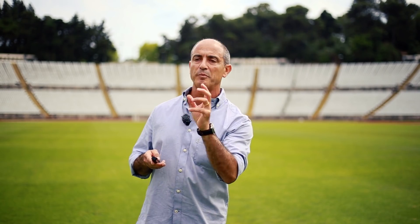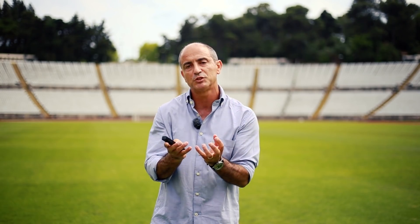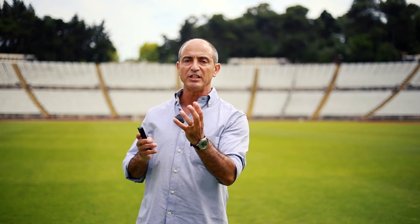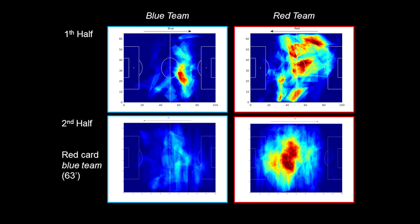The blue team played almost for half an hour with only 10 players. They needed to readapt their spatial configuration, which consequently changed the passing opportunities, as we can see in the heat map of the blue team. However, the most interesting result was how the red team adapted to these changes in the blue team's spatial configuration — instead of creating passing opportunities all over the field, they concentrated efforts to create threatening situations on the central lane of the field. So the algorithm can identify the changes in these tactical configurations on one of the teams.